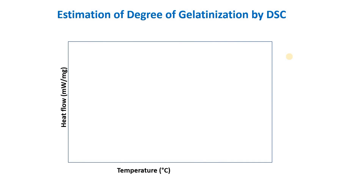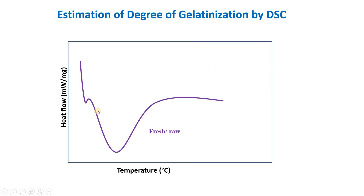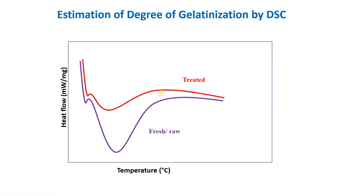For food samples containing starch, the material undergoes gelatinization, so we calculate the degree of gelatinization instead. Gelatinization is an endothermic process. In a fresh sample, starch is intact with a more crystalline structure. Gelatinization disrupts this crystalline structure. A sample with higher crystallinity gives a larger enthalpy of gelatinization, while a treated sample with reduced crystallinity gives a smaller enthalpy of gelatinization.